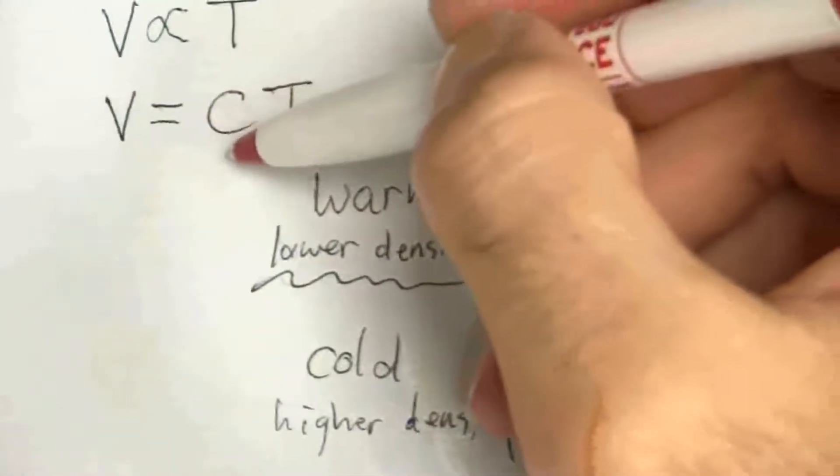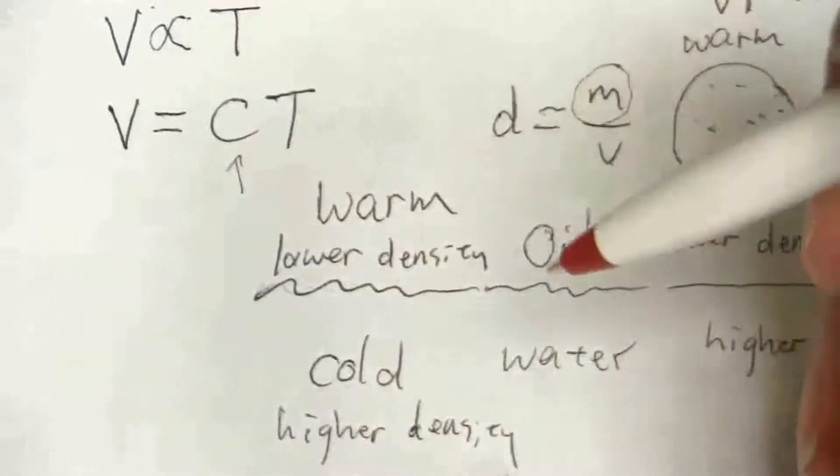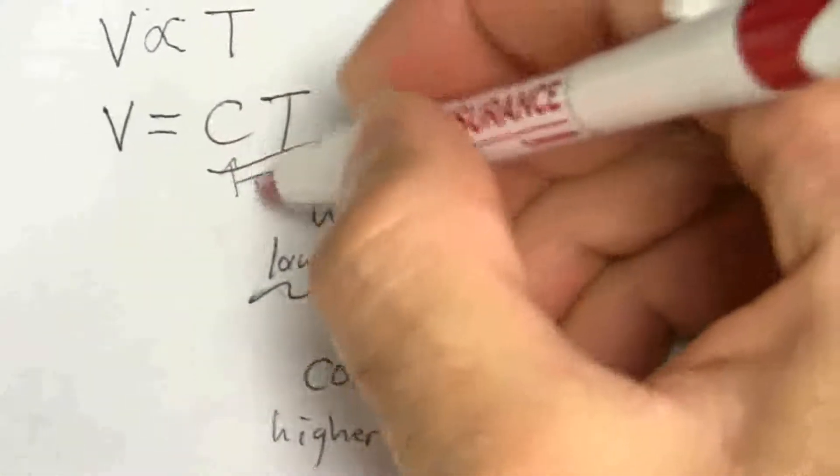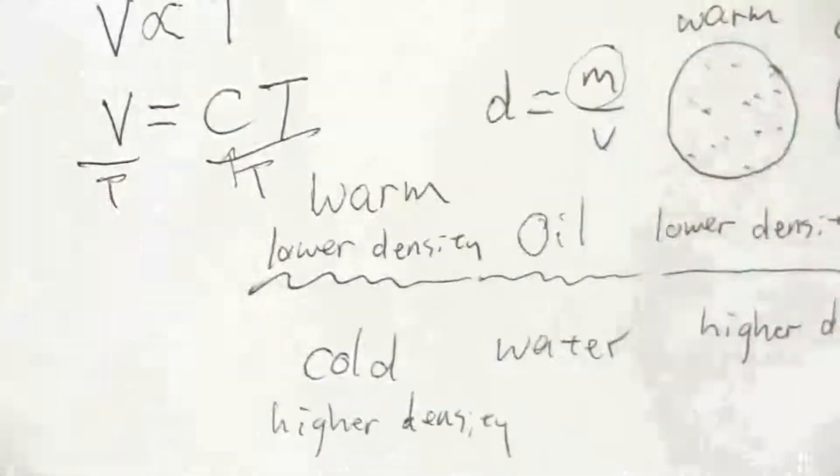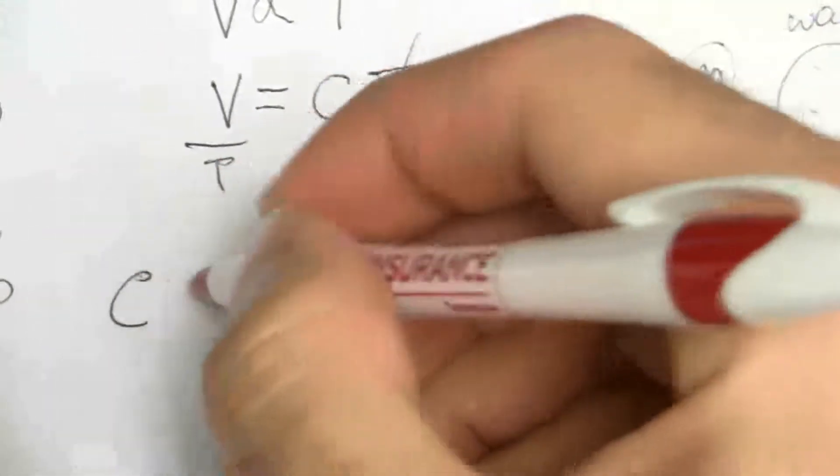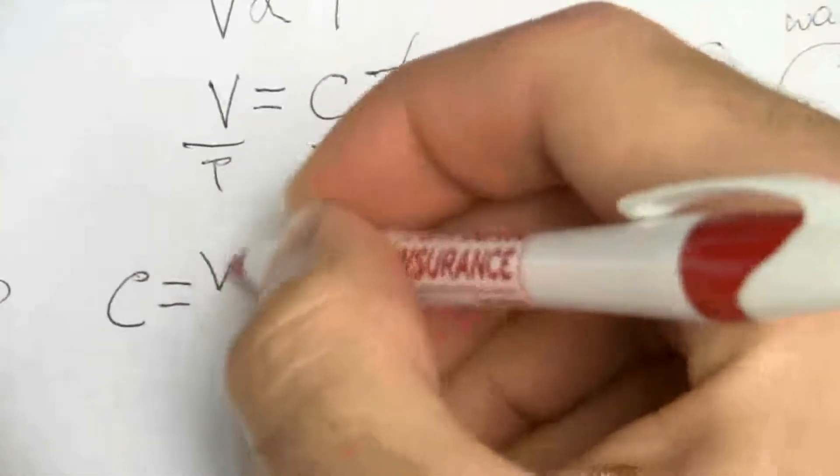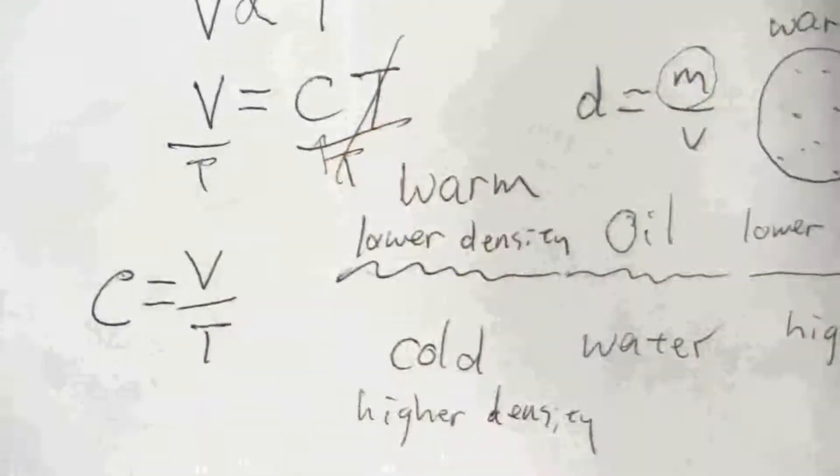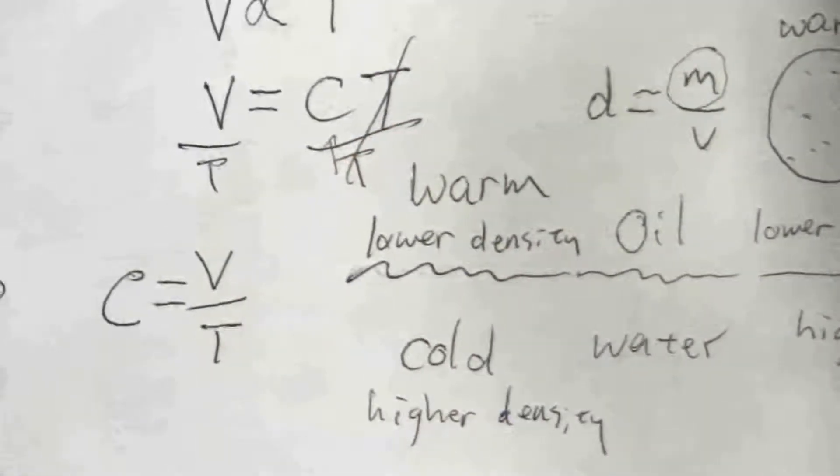And so if I solve for the constant, what do I have to do? I need to divide both sides of this equation by the temperature to cancel. And I have this constant equals the volume divided by temperature.